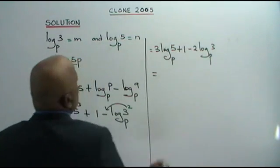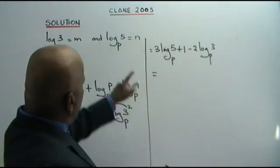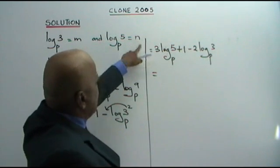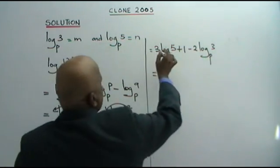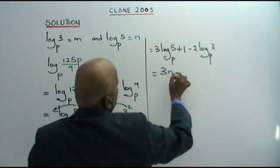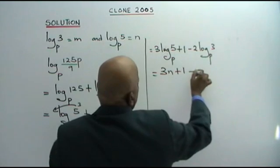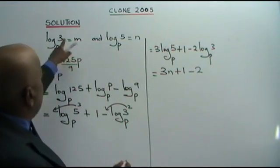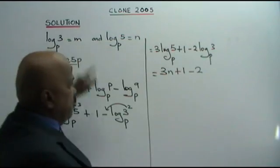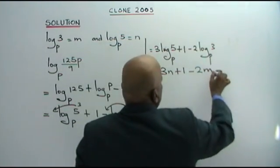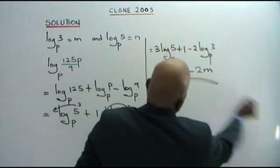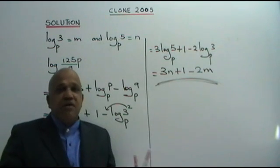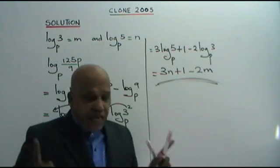This is equal to: what is log 5, base P? Log 5, base P, is N. So we get 3N plus 1, minus 2 times log 3, base P. What is log 3, base P? That is M. So we substitute M. This is your answer in terms of M and N: 3N + 1 - 2M.